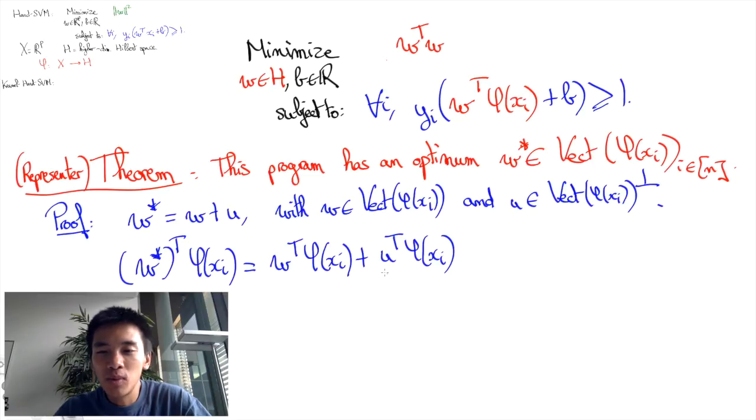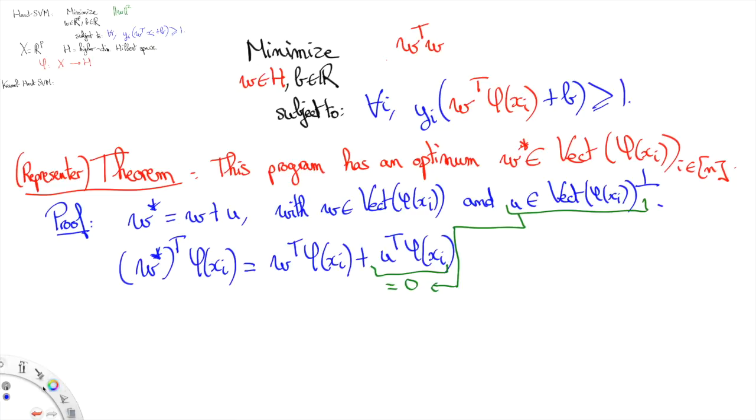And yet this second term here has to be equal to zero, because we assumed that U was in the orthogonal of the vector space spanned by the phi of XI. And in particular, is going to be phi of XI, and thus this is all equal to W transpose phi of XI. And since we assume that W star was optimal, we know that it's feasible, and thus if we replace the constraints, we see that W is going to be feasible as well.